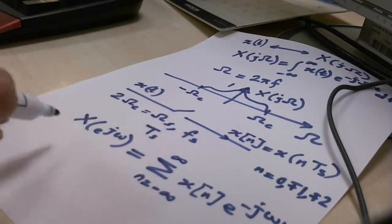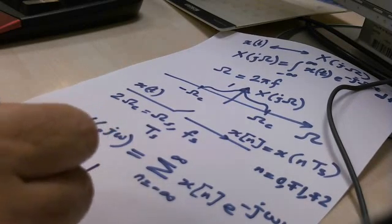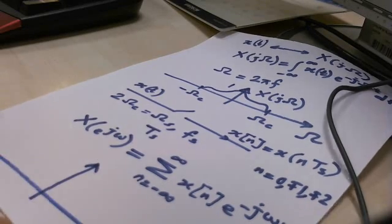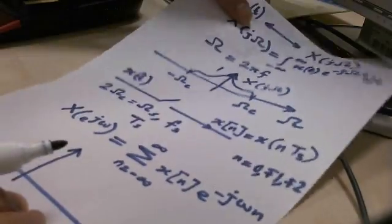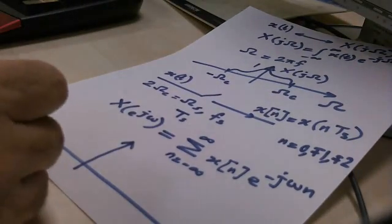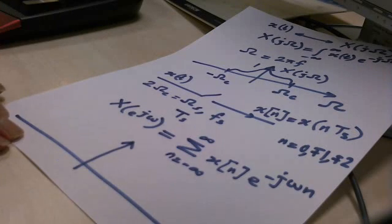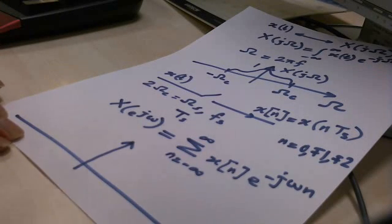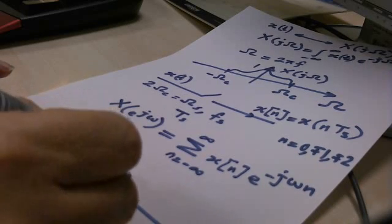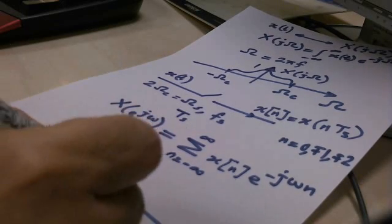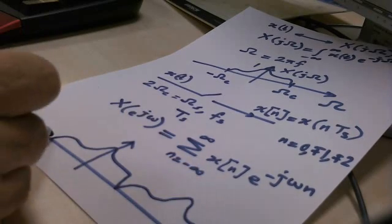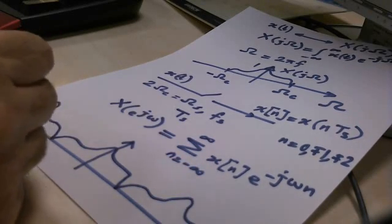In this case, x of e to the j omega will have the same shape as x of j omega.